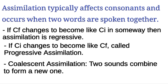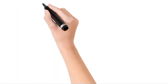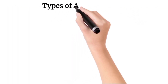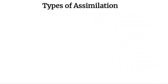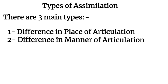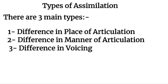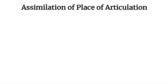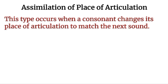So there are three different types: if CF becomes like CI, it is regressive; if CI changes to become like CF, it is progressive. Now, moving towards the types of assimilation, there are three categories we will discuss with examples. First is assimilation of place of articulation — when there is a difference in place of articulation. Second is difference in manner of articulation. Third is difference in voicing.